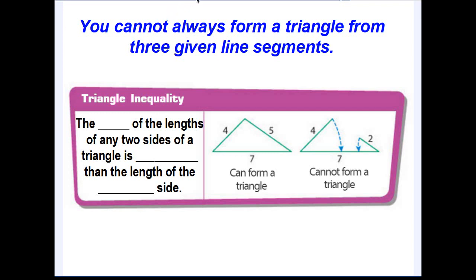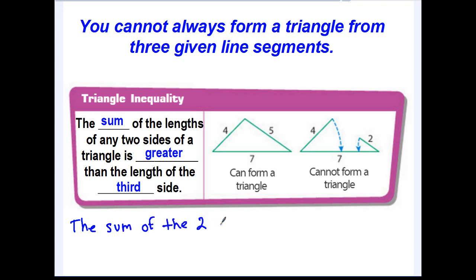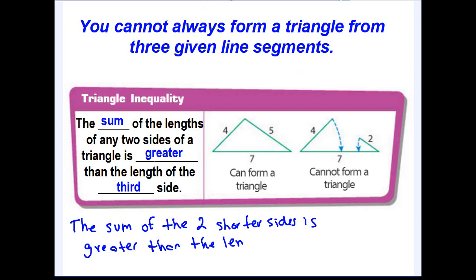This particular theorem — and you're going to want to write it down in your notes — says that the sum of the lengths of any two sides of a triangle is greater than the length of the third side. To simplify it a bit more: the sum of the two shorter sides is greater than the length of the longer side.